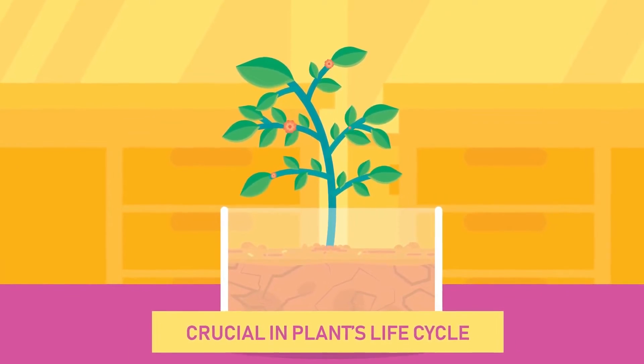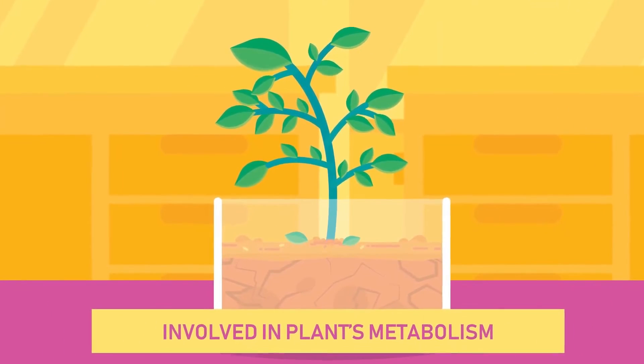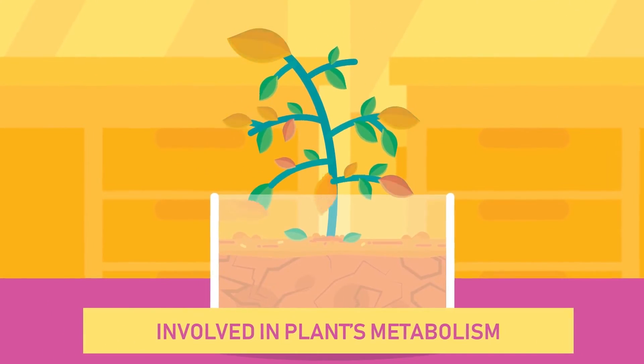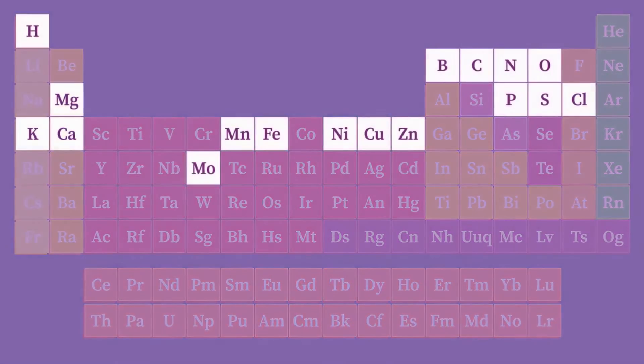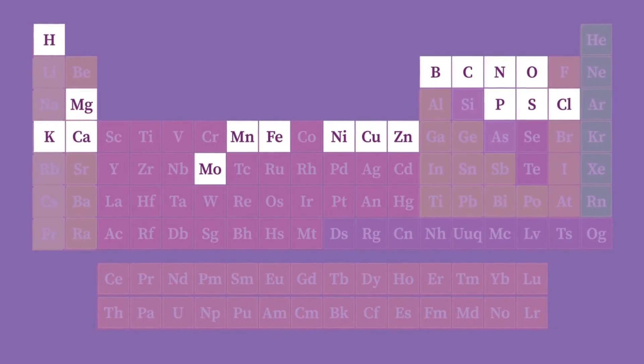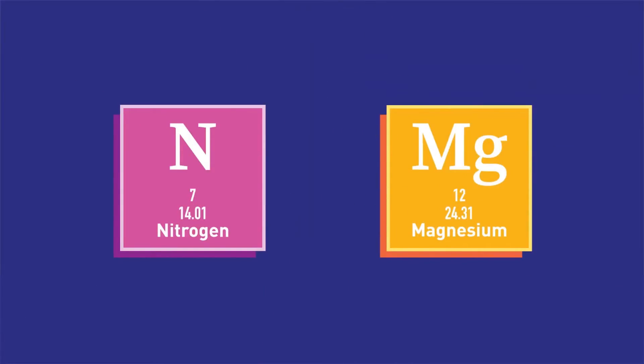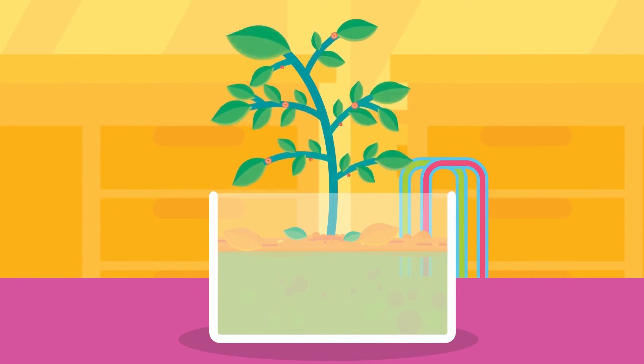According to them, an element is essential if the plant is not able to complete its life cycle in its absence, it cannot be replaced by another element, and it is directly involved in plant's metabolism. Based on plant's requirements, there are at least 17 elements known as essential nutrients. Two of the most important of them are nitrates and magnesium.